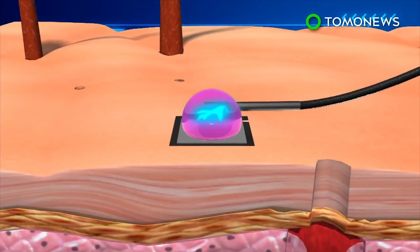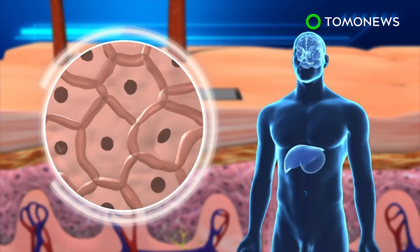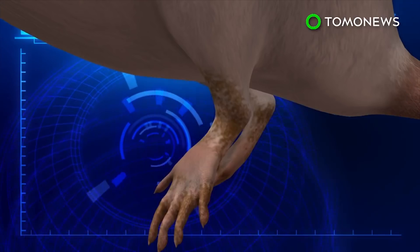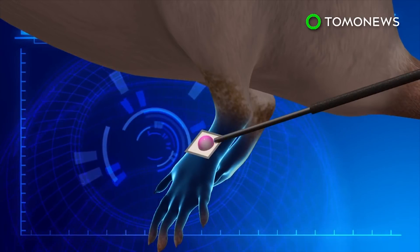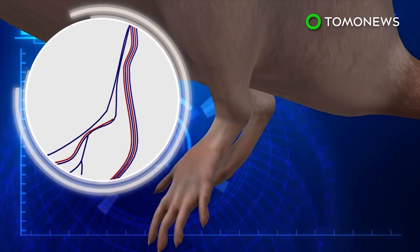The DNA is delivered through channels created by the current, and it reprograms skin cells to turn into specific cell types that can then be used in other parts of the body. When tested on a mouse with a damaged leg, researchers found vascular cells converted from skin cells formed new blood vessels that allowed the leg to heal in two weeks.